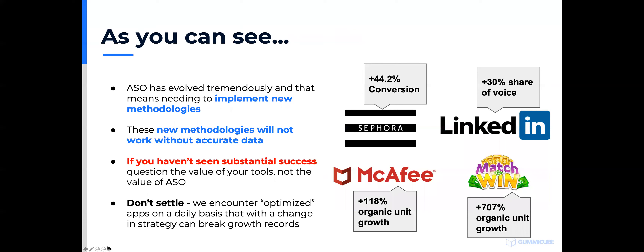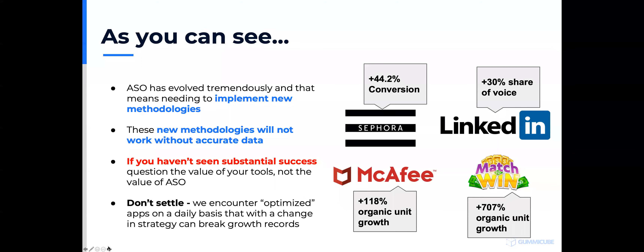ASO has evolved a lot. It's important to understand what methodologies work, what data works, and to question everything you see. A lot of advice online can be somewhat self-serving. If you haven't seen success with ASO or an aspect of ASO, take a deep look at the tools you're using and evaluate whether they're correct — not whether the activity is valuable. Never settle. If you've got 20% improvement with whatever techniques you're using, that's great, but there's probably more you can do. Look at different ways of optimizing to get there.